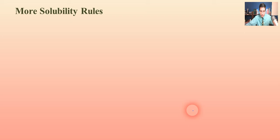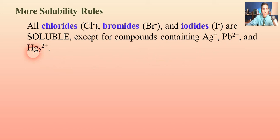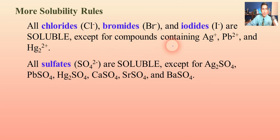On the next slide, I have some more solubility rules, but this time we have things that are usually soluble — meaning there are some exceptions that you have to know. All chlorides are soluble except for three: silver chloride, lead(II) chloride, and mercury(I) chloride — those will be insoluble. We can say the same thing for bromides and iodides, and fluorides work similarly. Chlorides, bromides, and iodides are the ones that pop up most frequently on the AP exam.